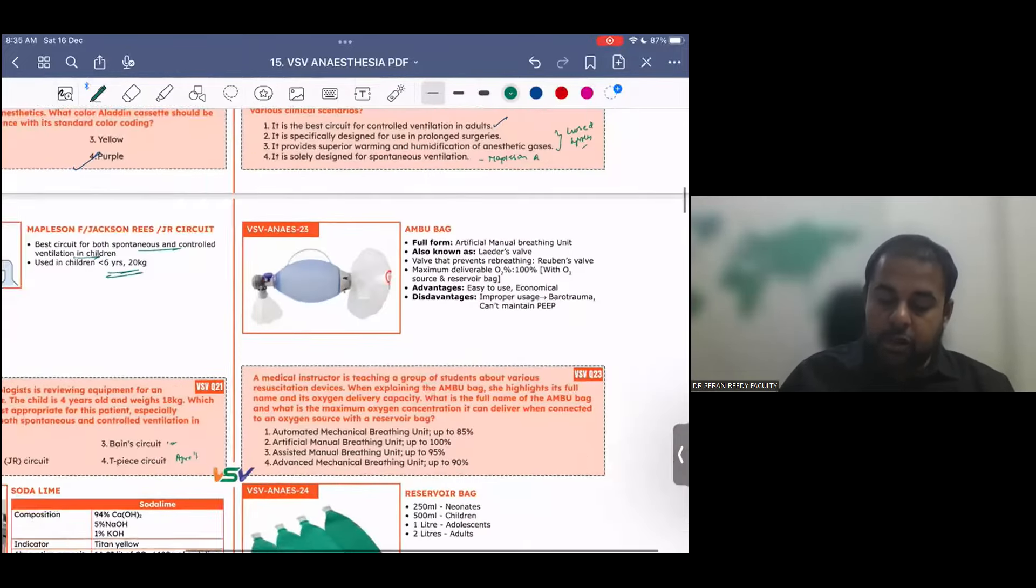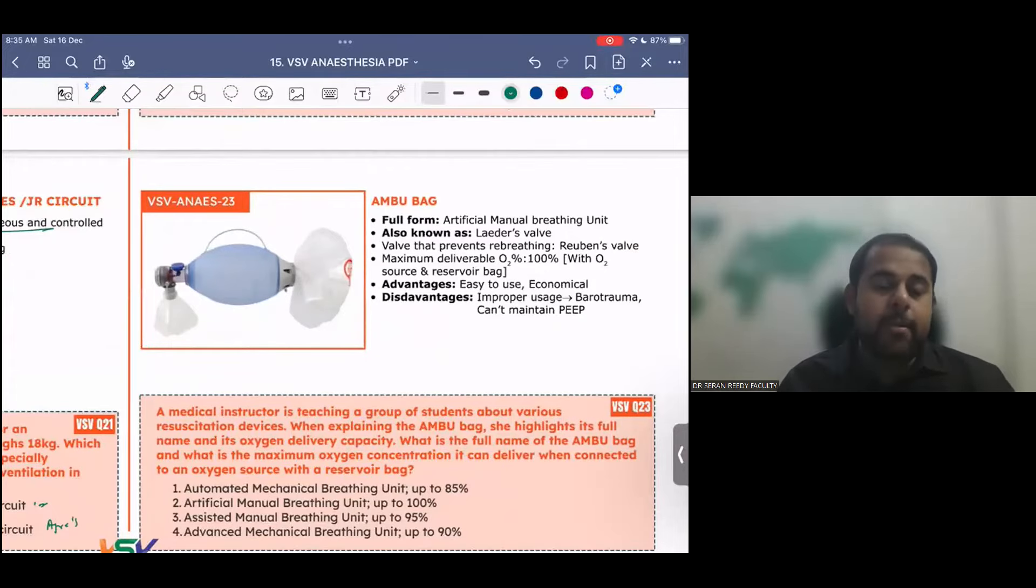This is Ambu bag, which you have been very familiar with, particularly during COVID, you might have seen this. The full form has to be remembered. This artificial manual breathing unit, also known as Ruben's valve, and here there will be a valve which prevents re-breathing, that is called the Ruben's valve, and the maximum deliverable percentage of oxygen. When you are ventilating through Ambu bag, how much can you deliver? Once you attach this breathing mask, this bag, and you attach the oxygen source here, you can deliver up to 100%, which is very important. The valve that prevents re-breathing, Ruben's valve, maximum deliverable oxygen is 100% with the presence of oxygen source and reservoir bag.